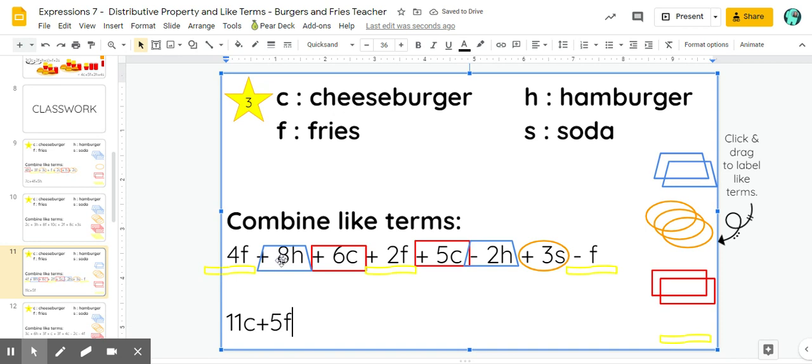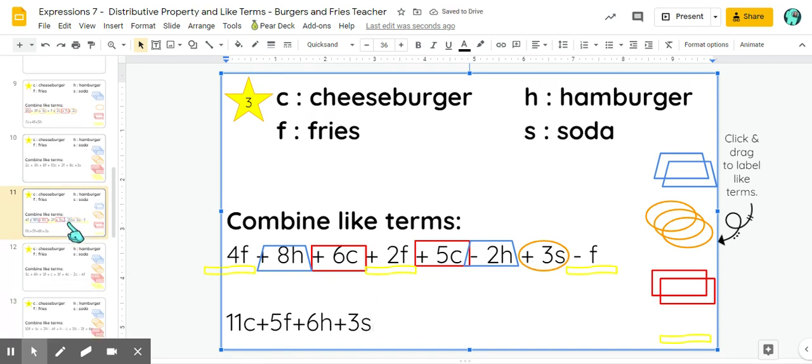Hamburgers. We have six hamburgers minus two hamburgers. So that's a total of four hamburgers. And then just three sodas. There's nothing to combine that with. There's our final answer.